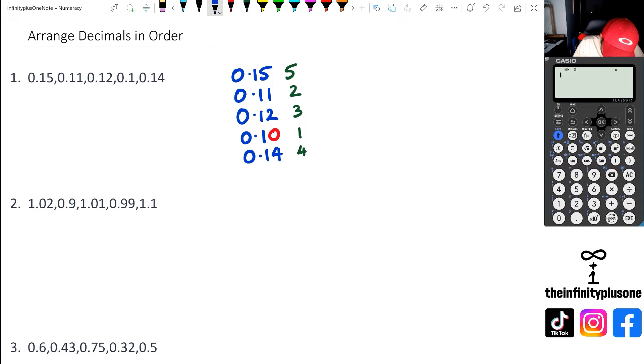So at this point I can put these decimals in order: 0.1, 0.11, 0.12, 0.14, and 0.15.